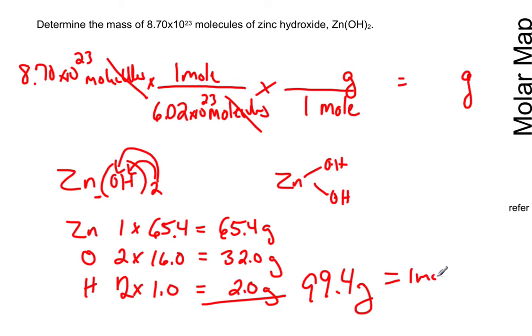That's one mole of this particular substance, zinc hydroxide. So that goes here. Anytime you have grams, you're looking on the periodic table. Molecules cancel, moles cancel, grams are left, which is good because that's what I want to end with.